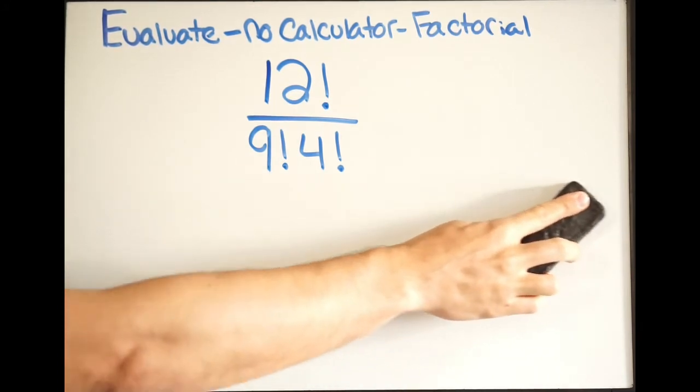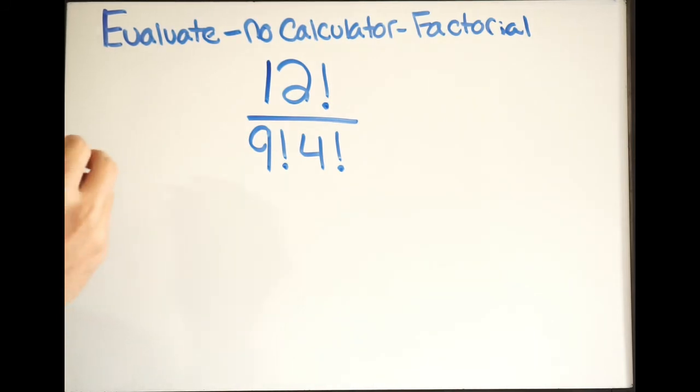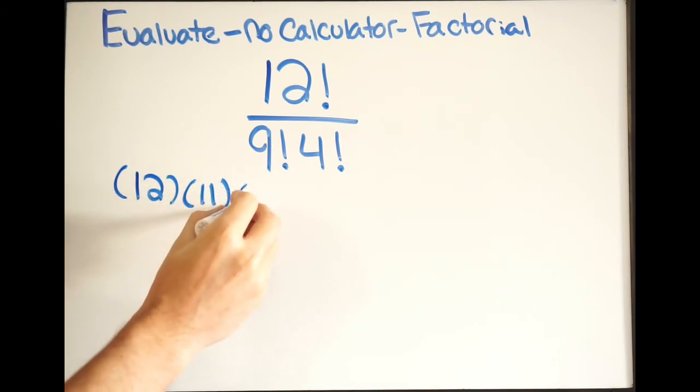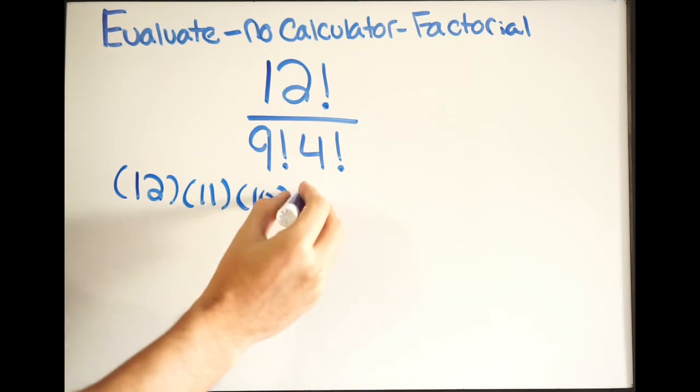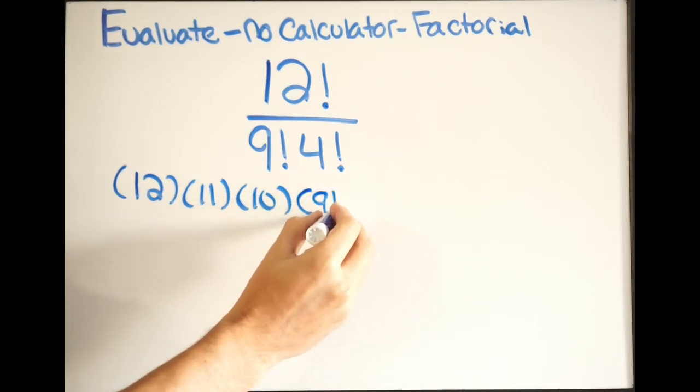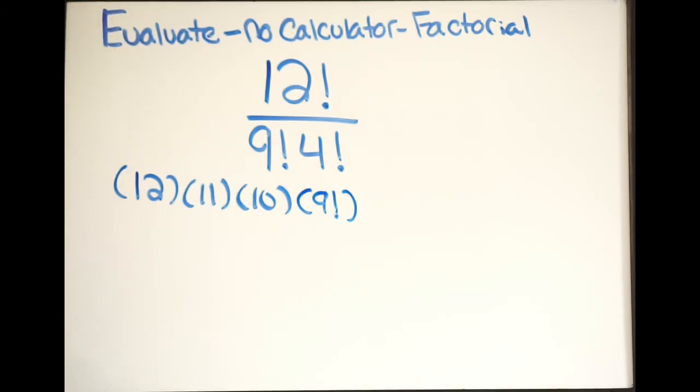So for example, I'm going to rewrite the numerator like this. I'm going to do 12 times 11 times 10. And now at this point, I'm going to write the rest as 9 factorial. Because that's going to take care of the rest.